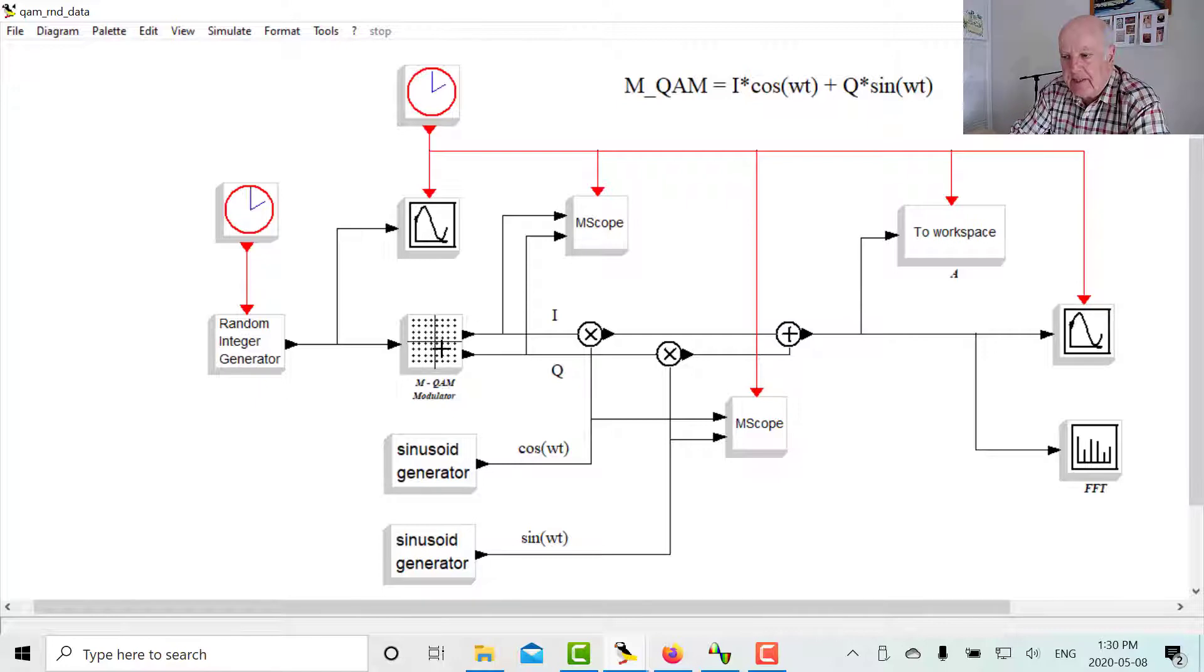And then when you put that random integer into here, this gives you the various plus or minus I values and the various plus or minus Q values. So there'll be eight possible combinations of I and eight possible combinations of Q, just as we showed. And then we multiply them by cosine and sine, and we add them together, and we get our output. So when I run the simulation, let's look at...